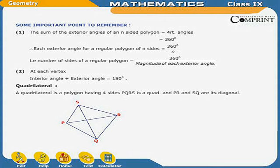Second, at each vertex, the interior angle plus the exterior angle is equal to 180 degrees.